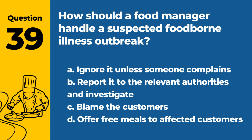Question 39. How should a food manager handle a suspected foodborne illness outbreak? a. Ignore it unless someone complains. b. Report it to the relevant authorities and investigate. c. Blame the customers. d. Offer free meals to affected customers. Answer: b. Report it to the relevant authorities and investigate. Prompt action is crucial in managing a suspected foodborne illness outbreak.